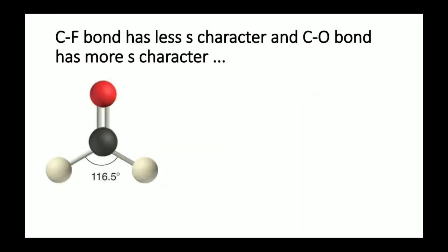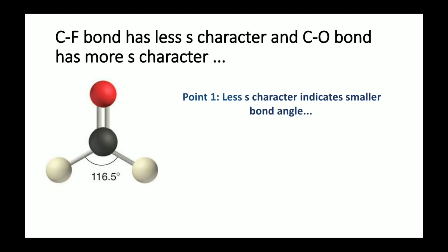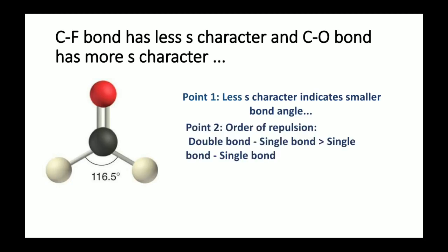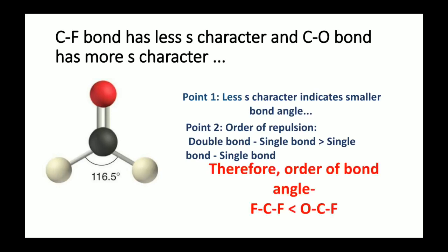For the bond angles: the C–F bond has less S character and the C=O bond has more S character. Less S character indicates a smaller bond angle. Therefore, the F–C–F bond angle is smaller than the F–C–O bond angle, because fluorine is more electronegative than oxygen. Additionally, the repulsion order of double bond–single bond is greater than single bond–single bond, which further makes the F–C–F angle smaller than the O–C–F angle.